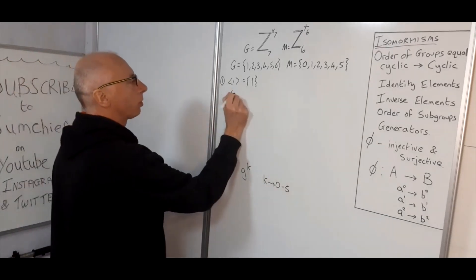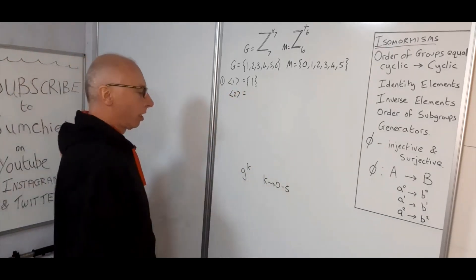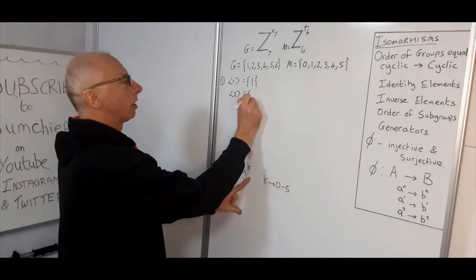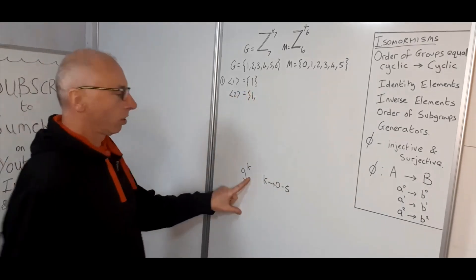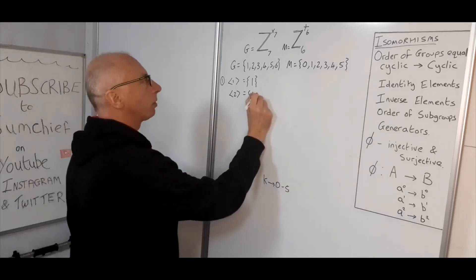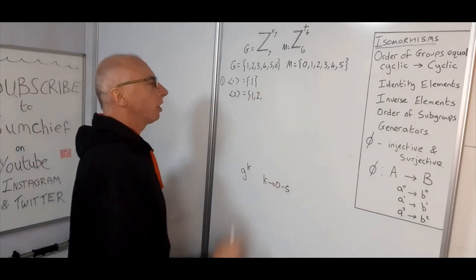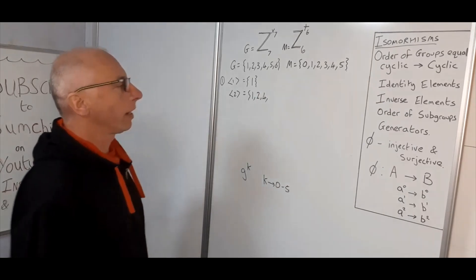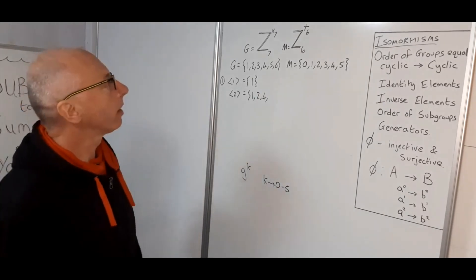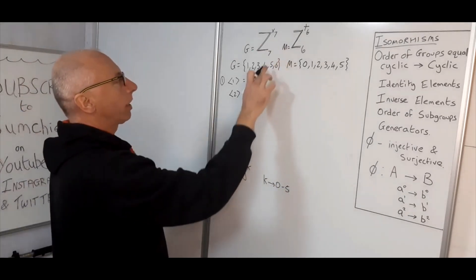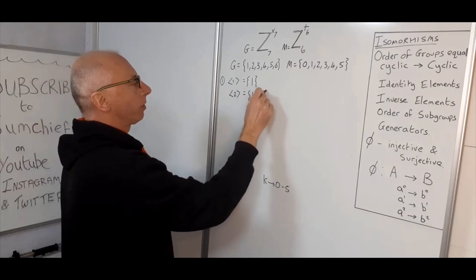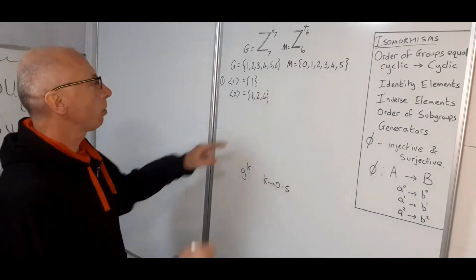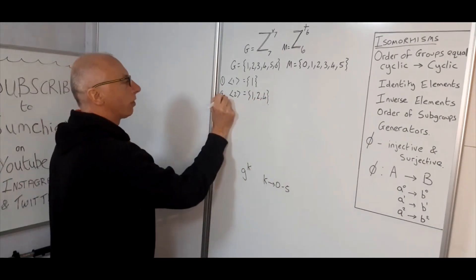Now element two: two to the zero gives one, two to the one gives two, two squared gives four, four squared is eight modulo seven — that's back to one. So the subset generated by two is {1, 2, 4}, which is of order three.